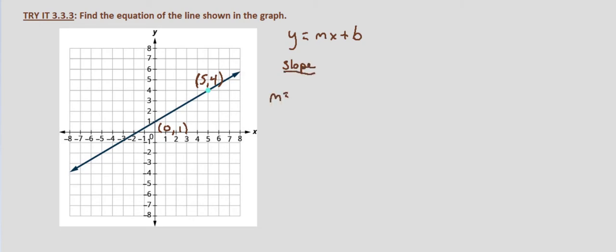So m equals y2 minus y1 over x2 minus x1. Since we're given the graph, you could just as easily use rise over run.